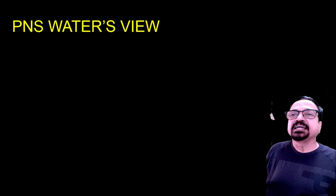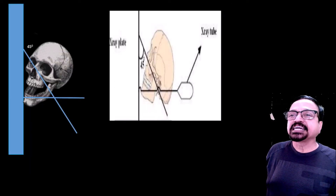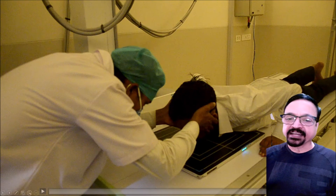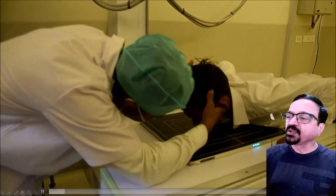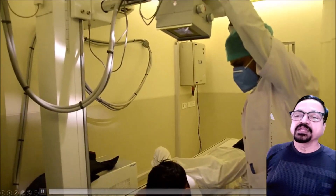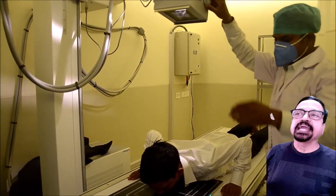Now let us look at the details of PNS by Waters view. The tube angulation is described here. Patient instructions are important: the nose is lifted around two inches from the cassette, the mouth is open, and there should be no angulation to the tube. If any angulation is present it should be removed, and the patient should be collimated properly.